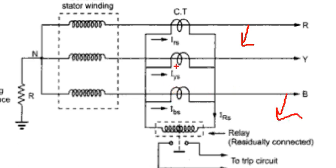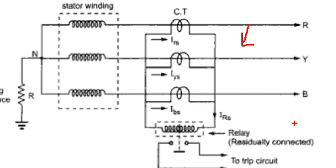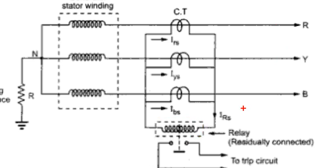CT saturation time — one CT becomes unbalanced. In the remaining CTs, unbalanced current flows, so it will operate. External through fault — external earth fault. The stabilizing resistor handles the external, through-fault secret fault condition.